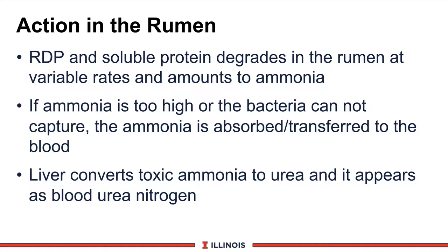For example, silage will degrade faster than some other protein or nitrogen sources. When ammonia is produced, if it is too high or if the bacteria cannot capture it — meaning convert it into microbial protein — the ammonia is then absorbed and transfers across into the bloodstream.